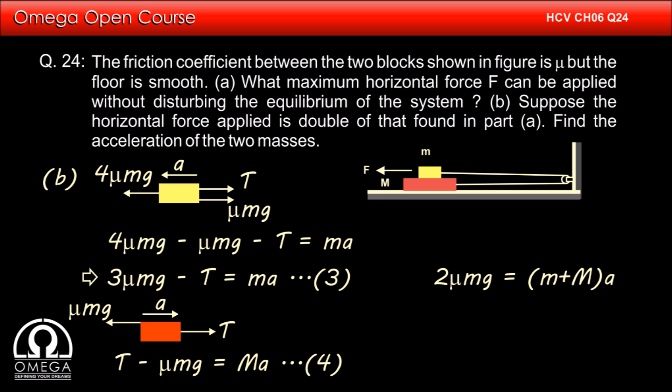Adding equation 3 and 4, we get 2 mu mg is equal to M plus M into A, or A is equal to 2 mu mg divided by M plus M. This is our answer.